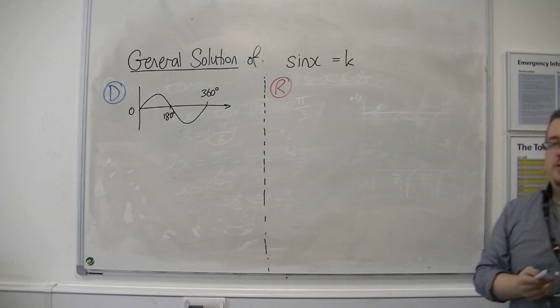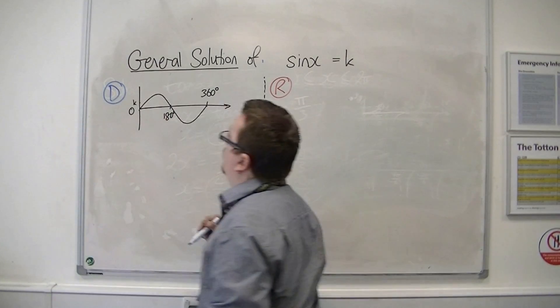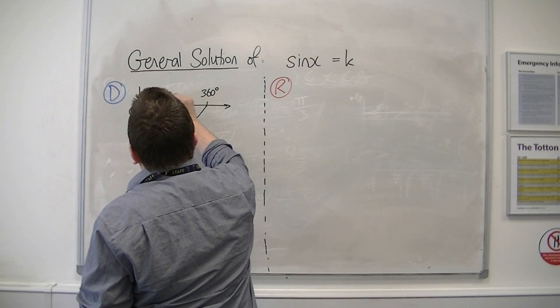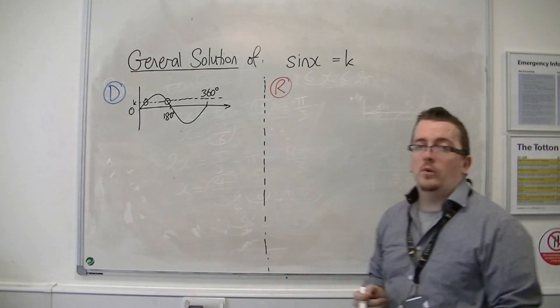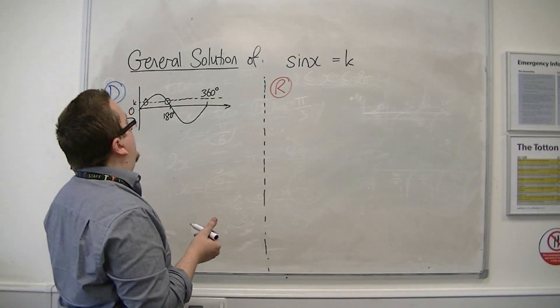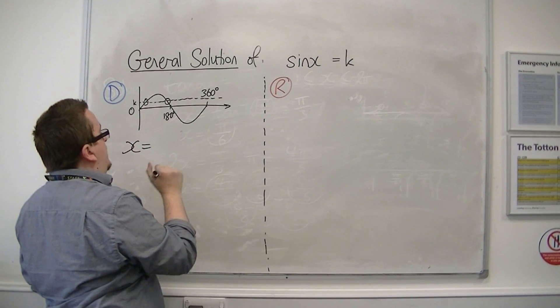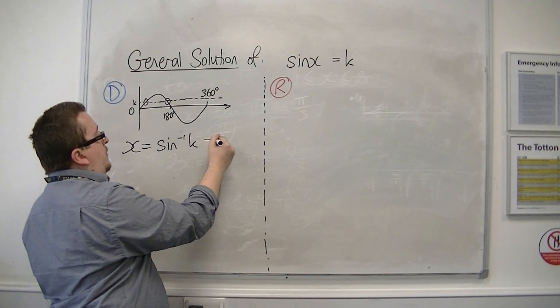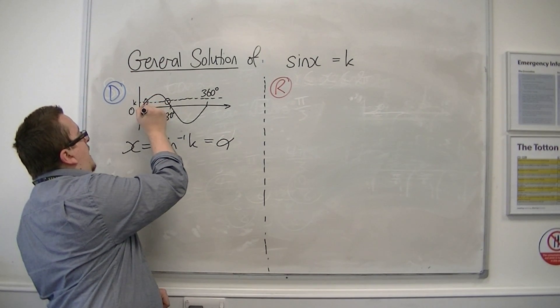Now if I'm going to solve sin x equals k, k is this value on the y-axis. You can see that the line y equals k will intersect the curve at different points. If I inverse sin k, then let's call this answer alpha. So the answer that I get is alpha.